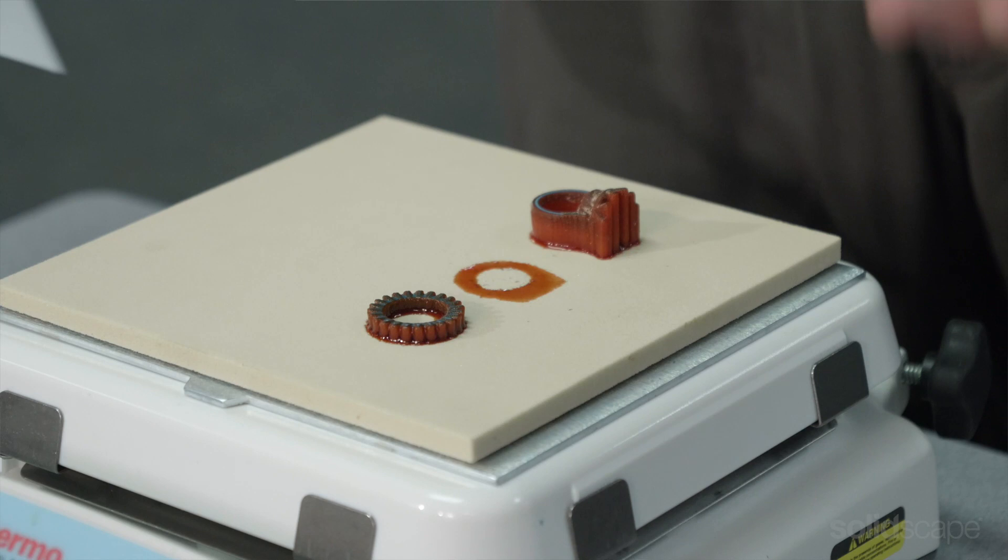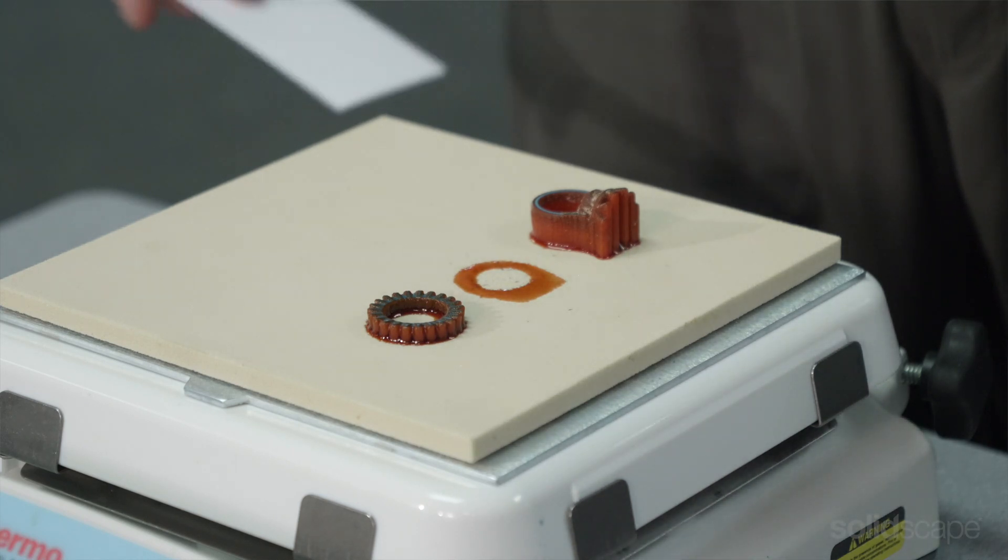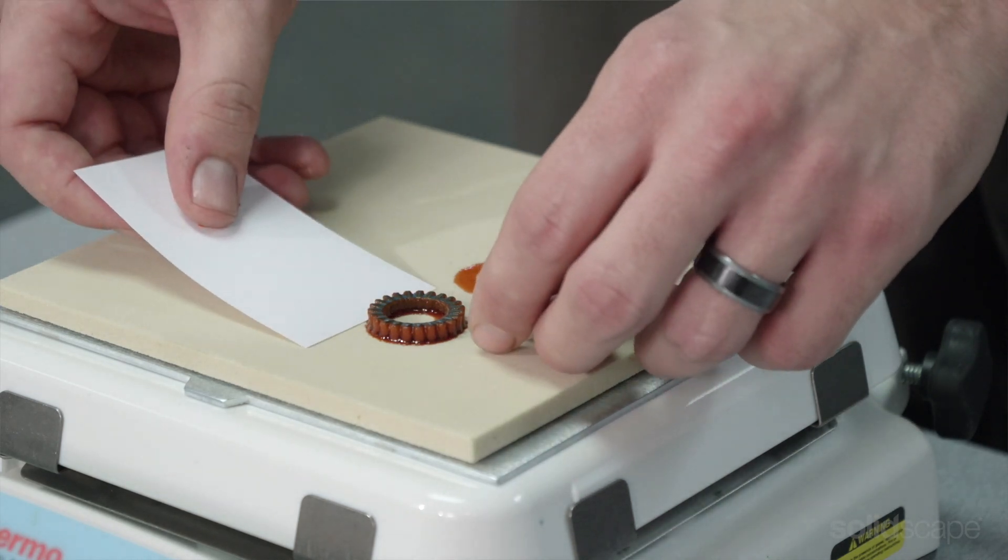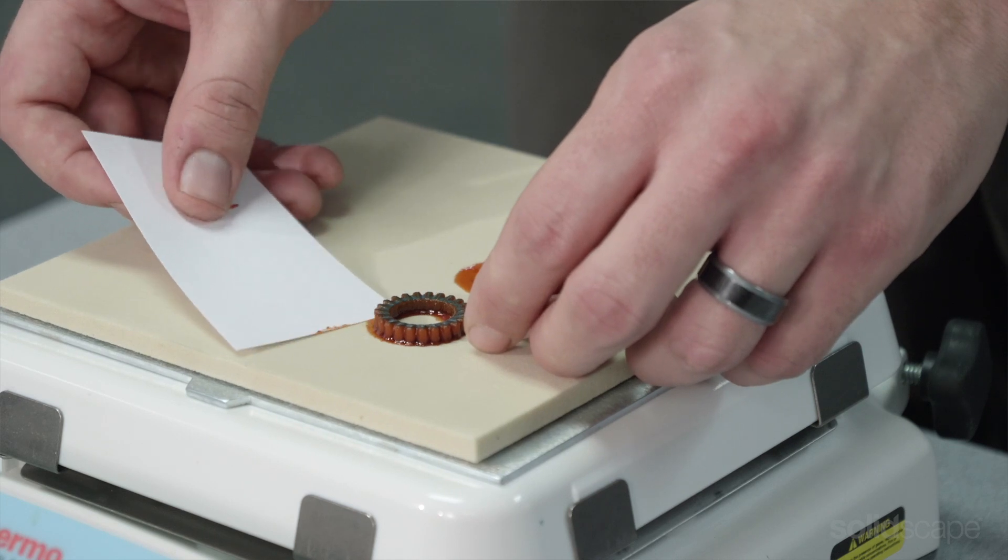But for more fragile or longer models we recommend using something like a business card or post-it note. This method ensures the model is completely loose without causing any damage.